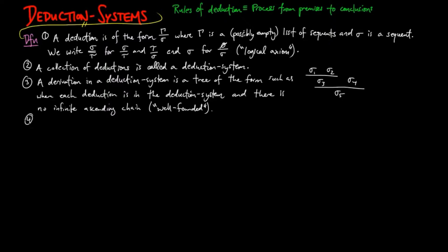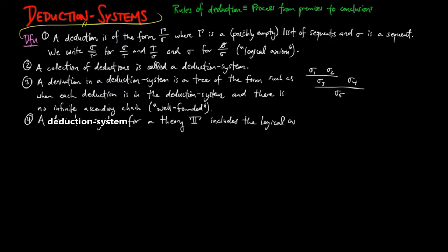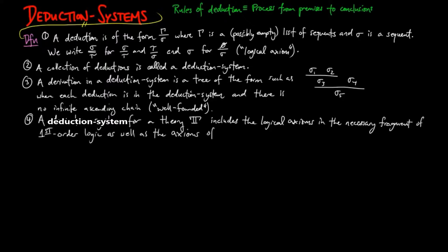A deduction system for a theory T will include the logical axioms in the necessary fragment of first-order logic as well as the axioms of T. Next we'll give the various deduction system rules that exist in the fragments of first-order logic.